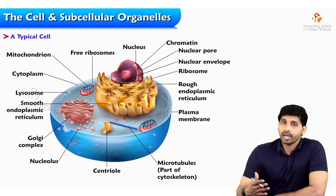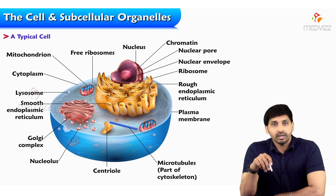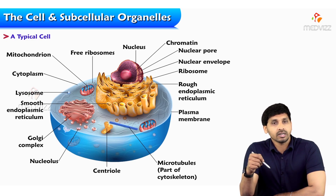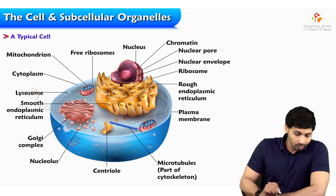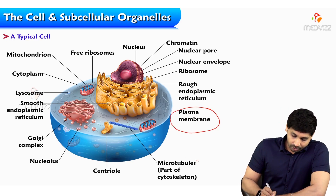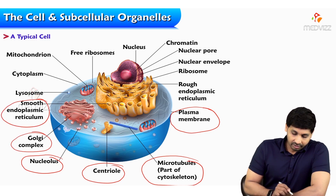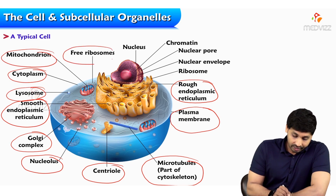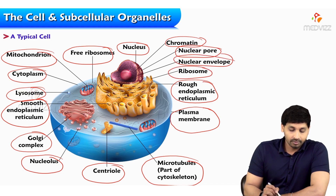Then we will study the differences between prokaryotic cell and eukaryotic cell. A typical cell consists of a rigid cell membrane in eukaryotes, and in the case of prokaryotes it is a cell wall. As we all belong to the eukaryotic type, our concern is to study the eukaryotic cell. Here in the picture you can see the typical composition of the cell along with subcellular organelles: plasma membrane, microtubules, centrioles, nucleolus, Golgi complex, smooth endoplasmic reticulum, rough endoplasmic reticulum, lysosomes, cytoplasm, mitochondria, free ribosomes, nucleus, chromatin, nucleopore, nuclear envelope, and ribosomes.